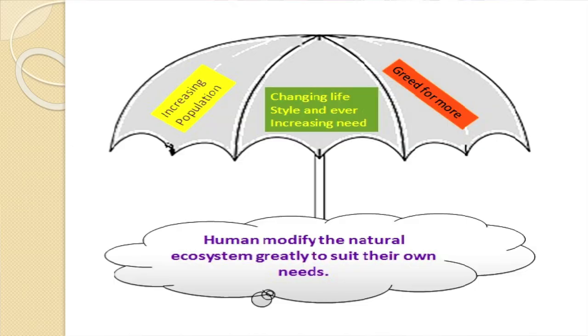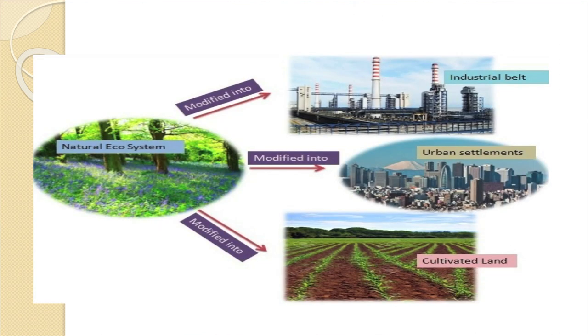Why do we need to modify our ecosystem so massively? There are basically three reasons: one is increasing population, then changing our lifestyles and over-increasing our needs, and of course greed for more. All these together have resulted in humans modifying their natural ecosystem to suit their needs. This slide in brief shows the major ways in which we have modified our natural ecosystems, which consisted primarily of green forests, vast seas, waterways, etc.